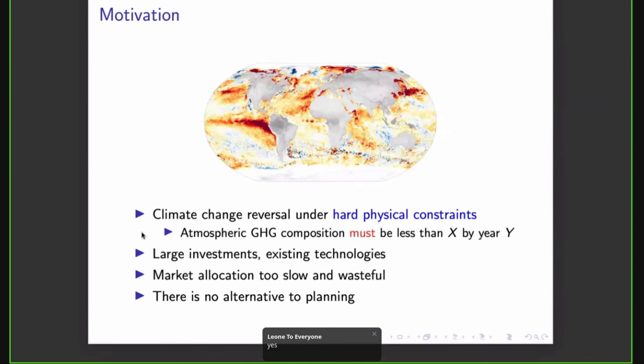As we all know, we're in the middle of a climate crisis and we have to effect climate change reversal under hard physical constraints. So we have to get greenhouse gas composition in the atmosphere below some level X by year Y. This is not a question of money, but of real physical constraints. This will require large investments and we have to use existing technologies. The market mechanism is much too slow and wasteful and is in fact the cause of the problem in the first place. So to turn a neoliberal slogan, there is no alternative to planning.